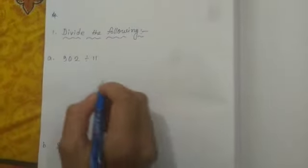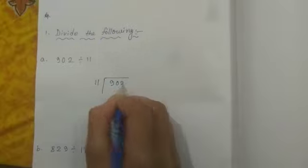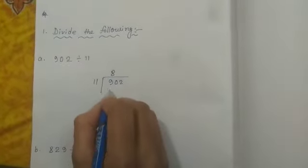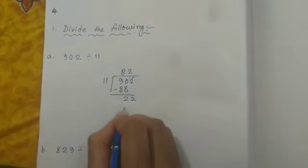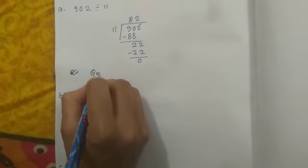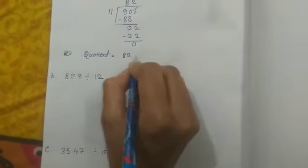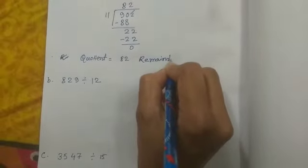Class 4 students, divide the following. Problem A: 11,811 divided by 88. The quotient is equal to 82, remainder equal to 0.